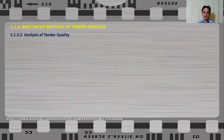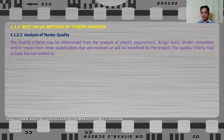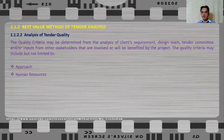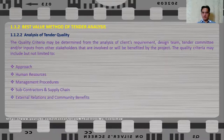Let us analyze the tender for its quality. The quality criteria may be determined from the analysis of the client's requirement, the design team's requirement, the tender committee, or inputs from other stakeholders. The quality criteria may include but are not limited to: the approach — does the tenderer fully understand the project requirement; human resources — the staff assigned and their qualifications; management procedures; subcontractor and supply chain; and external relations and community benefits.